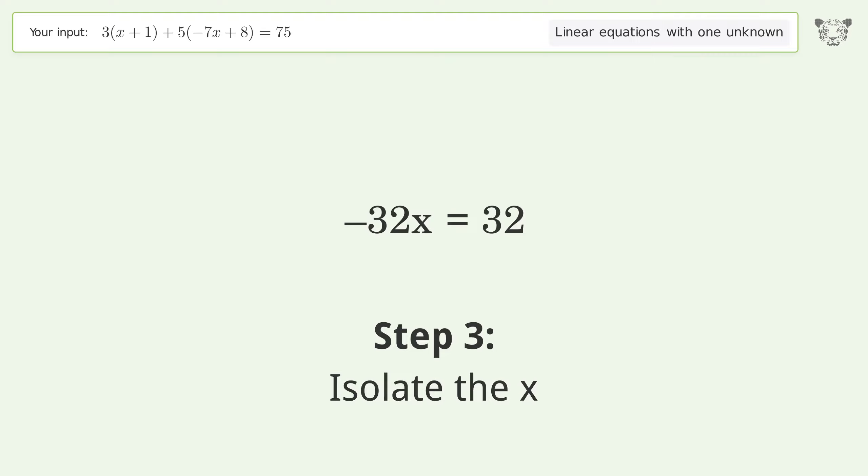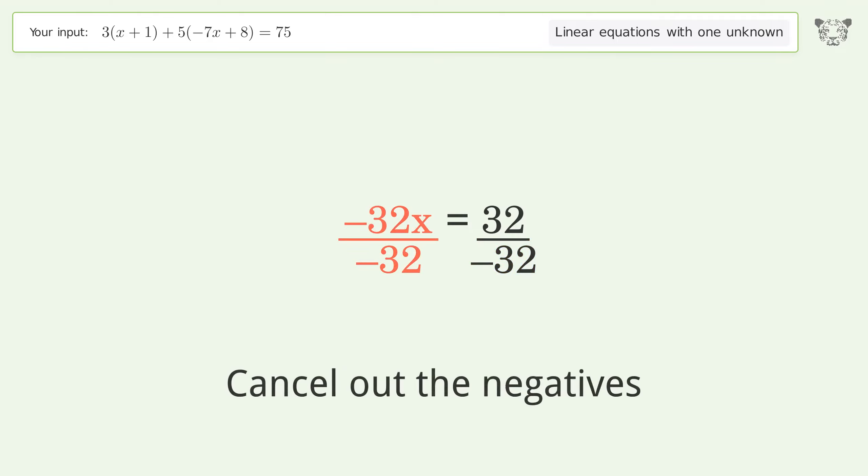Isolate the x. Divide both sides by negative 32. Cancel out the negatives. Simplify the fraction.